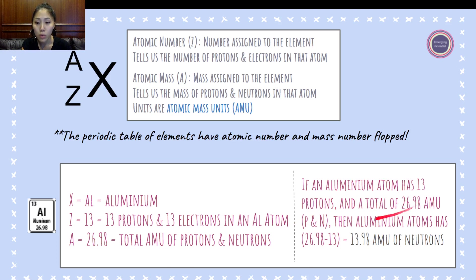And so the total would then be 26.98 protons and neutrons minus 13 protons gives us 13.98 atomic mass units of neutrons. It tells us the atomic number of protons and neutrons through the atomic number as well as the mass number, the total different numbers of protons, neutrons, and electrons.